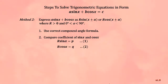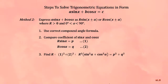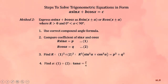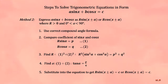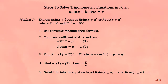Third step: find the value of r by squaring and adding the two equations. Fourth step: find the value of alpha by dividing the two equations to get tangent of alpha. Fifth step: substitute the values of r and alpha into the equation to get r·sine(x ± α) = c or r·cosine(x ± α) = c. Last step: solve the basic trigonometric equation.